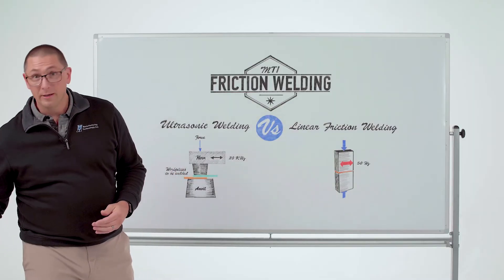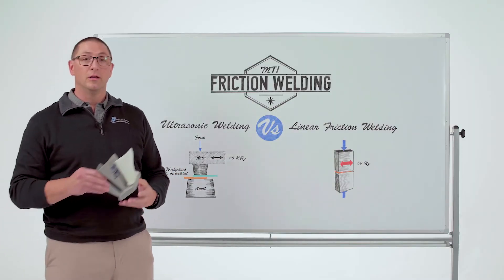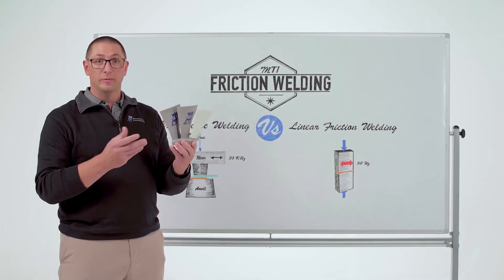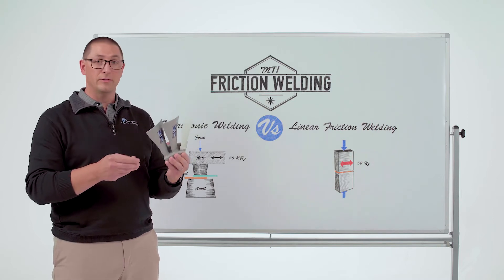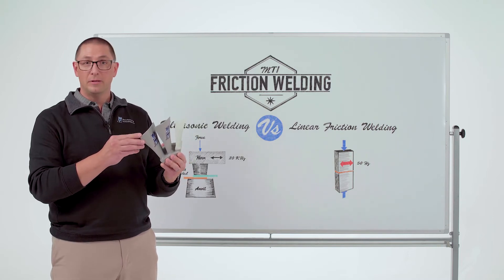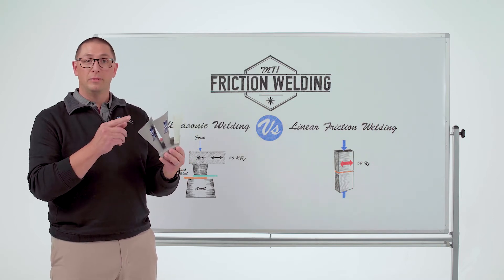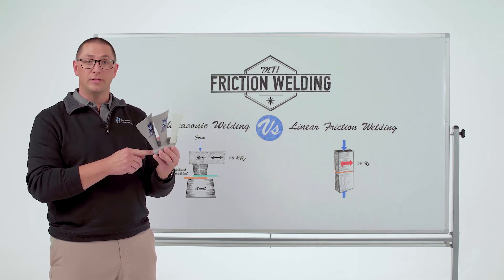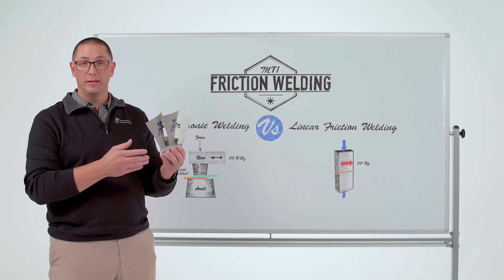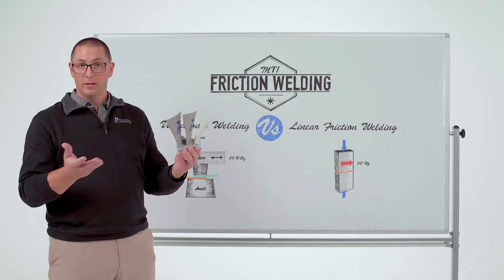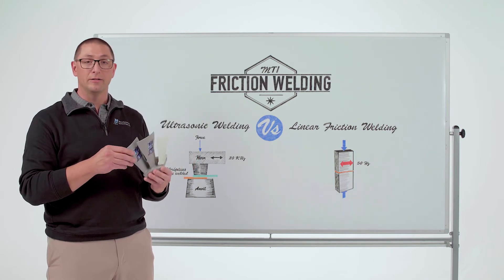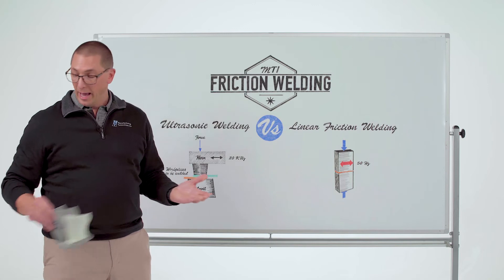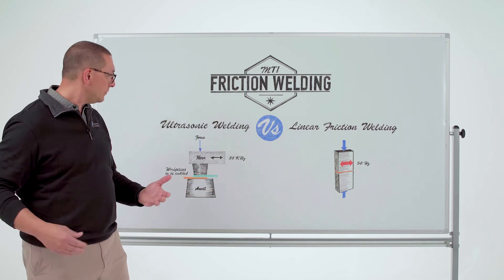In linear friction welding, we're welding pieces of metal together. Remember, it's a solid state joining process, and the typical application might be blades to a disc to make blisks for jet engines. These would be made out of titanium as we're forging them.